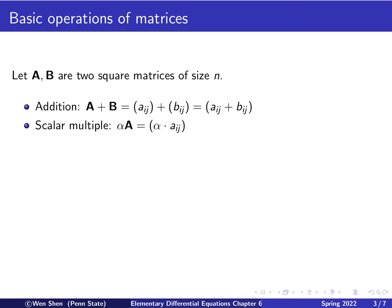The next one is the scalar multiple. So here alpha is a scalar number, and you can multiply alpha with the matrix A. And then what it does is that you multiply every element in the matrix A with the same constant alpha.